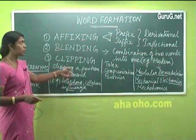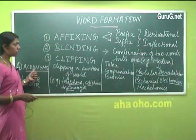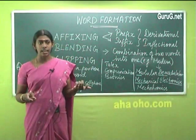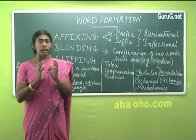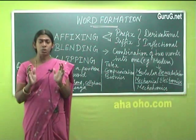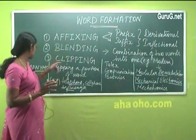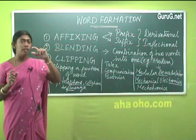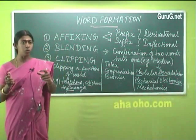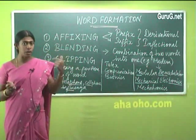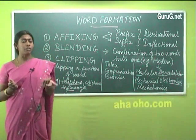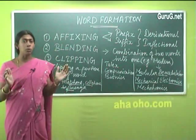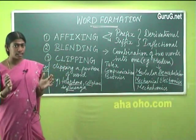The fourth process by which we form words is acronyms. An acronym is where you pick out the first letters of a scientific theory or a disease, put all those first letters together, and pronounce those letters as a word. For example, AIDS is formed from Acquired Immunodeficiency Syndrome — A from acquired, I from immuno, D from deficiency, S from syndrome — all these first letters put together form the word AIDS. This is an acronym.